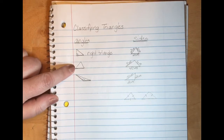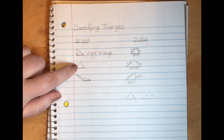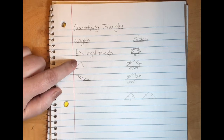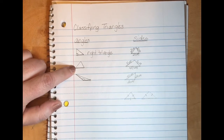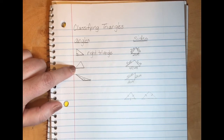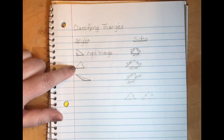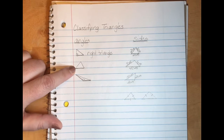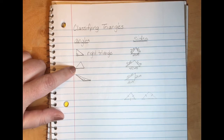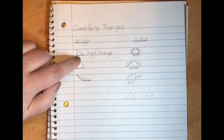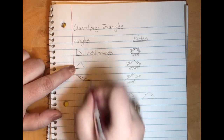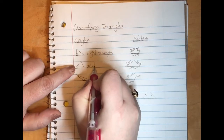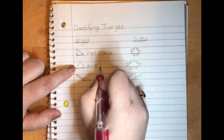In this second triangle you'll notice all three angles are small. If you remember your angles, the ones that are less than 90 degrees are called acute angles. So when you have a triangle with three of those smaller acute angles, it is known as an acute triangle.